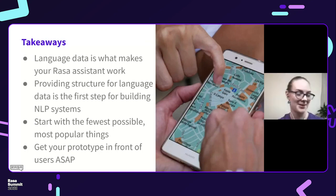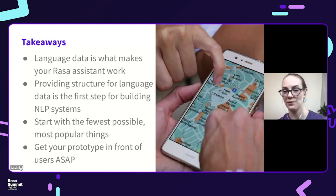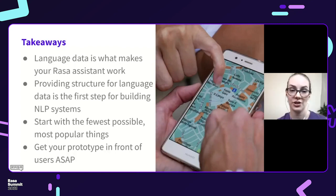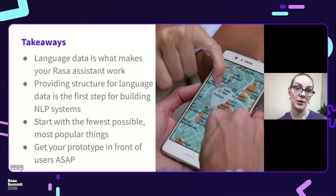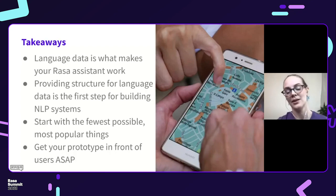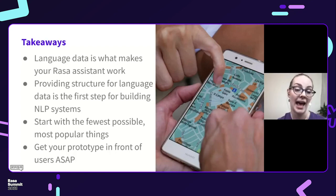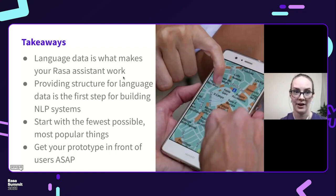Main takeaways: raw language data is what makes your Rasa assistant work. Working with language data — sorting it, annotating it — is the core and bulk of the work you need to do to get your assistant off the ground. Providing structure for that language data is the first step for building NLP systems. That goes for Rasa assistants, but also for things like training features — first you need a corpus, and the corpus needs to be organized in a certain way. If there's ever an NLP project where you're not working with data first and it's a deep learning project, it's because somebody else has already done that work for you. Start with the fewest possible, most popular things — the most likely conversation flows, the most likely intents — and add things as they're needed. You'll know they're needed because you're getting your prototype in front of users as soon as possible, getting user data in there, and making sure that it works.